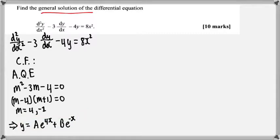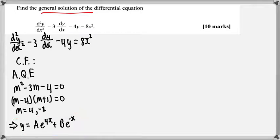You have to look at other forms because it doesn't always give real and distinct roots. You have to consider the forms for when it is complex roots and also when you have equal roots. In this case here, it's two real distinct roots, but sometimes it could be complex roots or equal roots.